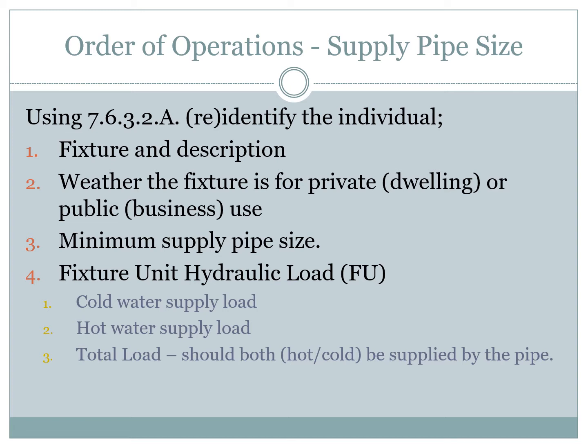Next up: order of operations for supply pipe sizing. This is table 7-6 — seven is plumbing, six is distribution or supply size. You need pretty much the same sorts of things: your fixture and description, which is different from the drainage table — the terminology changes. For example, that's where we go from 'laundry tray' in one table to 'sink laundry' in this table. You'll find it under S. So you have to know your fixture and your description.